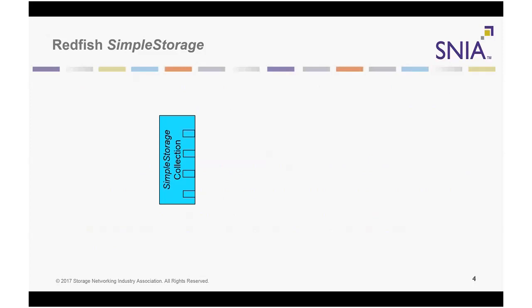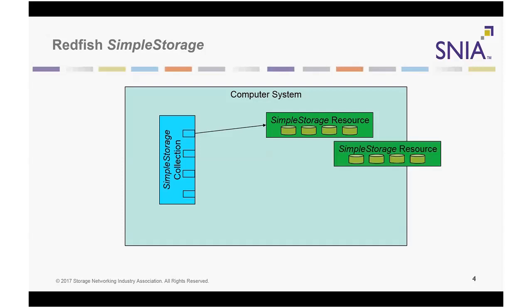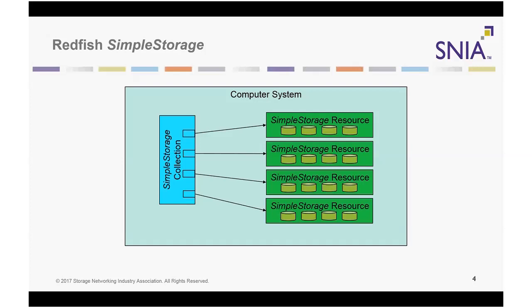Simple storage is represented by a collection of simple storage resources that are part of a computer system. Each simple storage resource comprises an array of storage devices, representing a physical device controller and its directly attached physical devices. Storage devices appear when they are physically present as part of the simple storage collection in a computer system resource. If a device has storage media, the amount of storage is represented by the capacity bytes property of the device entry. Storage devices that are physically added later automatically appear as modified simple storage resources.